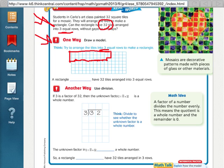It cannot have 3 full equal rows because there's one spot right there that isn't going to be used. So a rectangle cannot have 32 tiles arranged into 3 equal rows. That's one way to do it. Get out a piece of paper and draw a model.